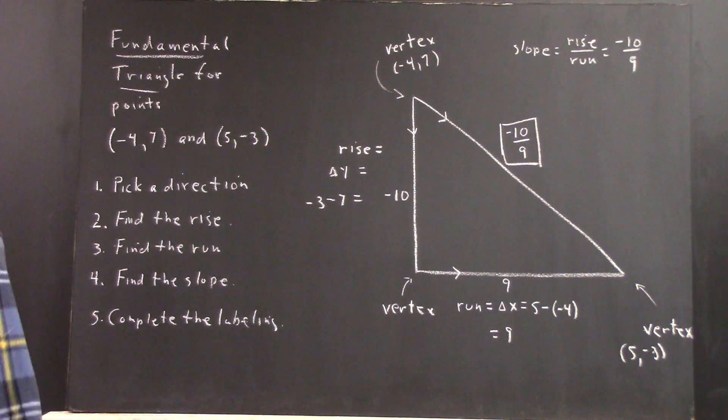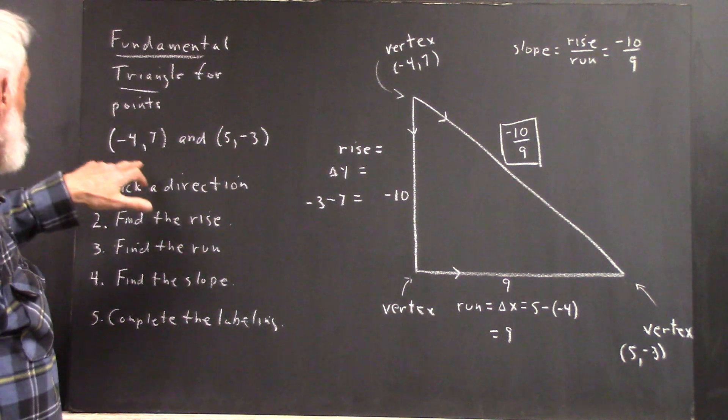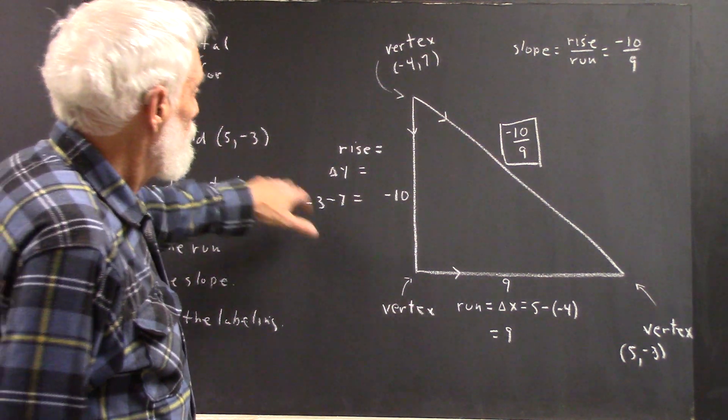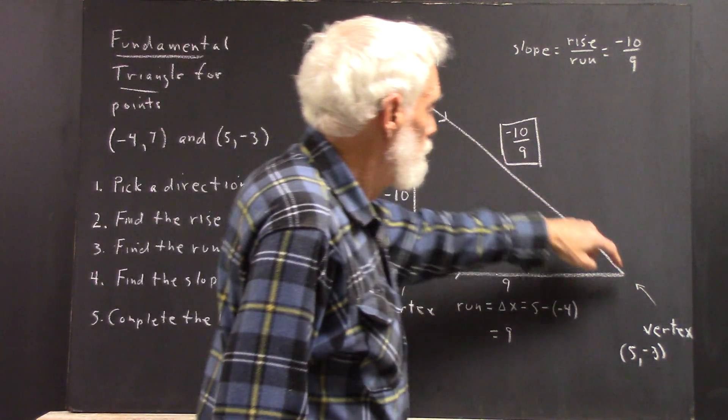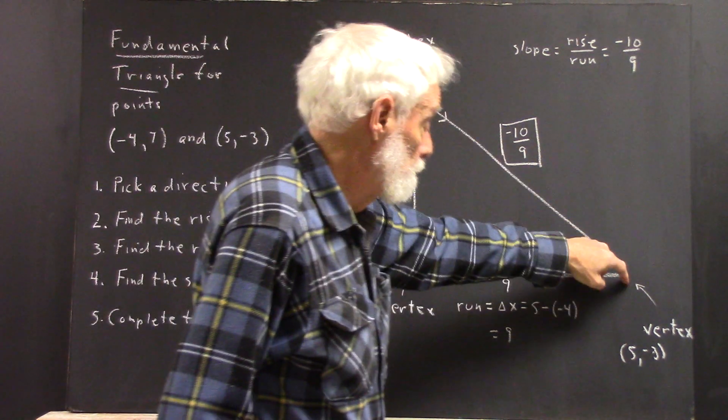A very quick summary of how we do the fundamental triangle for two points. If we've got the points negative 4, 7, and 5, negative 3, those points will be the vertices of your fundamental triangle on the hypotenuse.